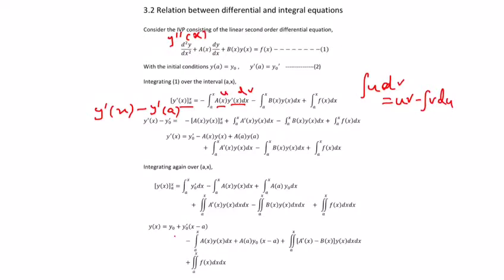On the left side, we are taking y double dash of x. The remaining goes to the right side. When you integrate y double dash of x, it becomes y dash of x, evaluated over the integral from a to x. On the right side, a(x) y dash(x) — you take the integral from a to x; b(x) y(x) also you take the integral from a to x. Then iterating f(x), so the equation is there.